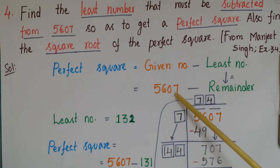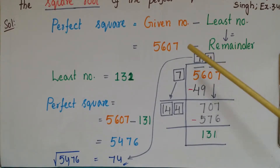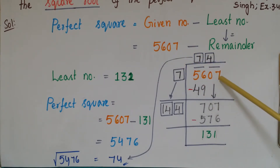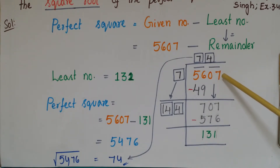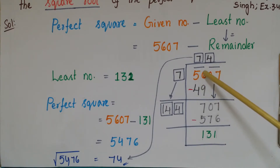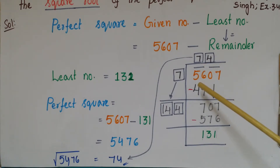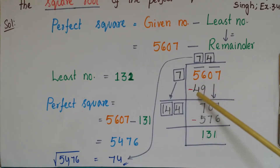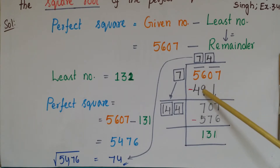Let us find the square root of 5607 using the long division method. Write the number 5607 and place bars over every two digits starting from the unit digit — so bar over 07, and bar over 56. Starting from 56, think of a square number less than or equal to 56. That is 49, which is 7 squared.